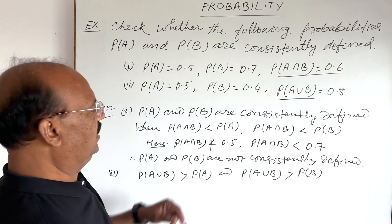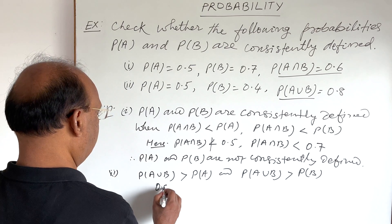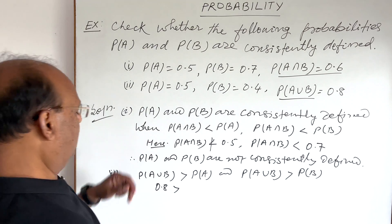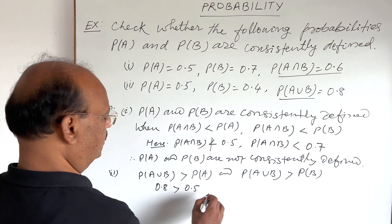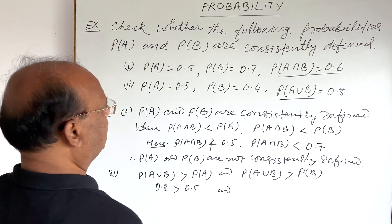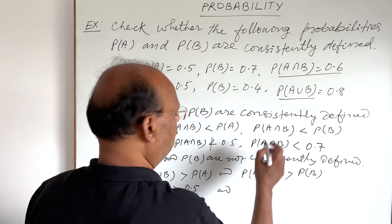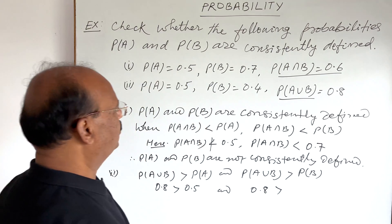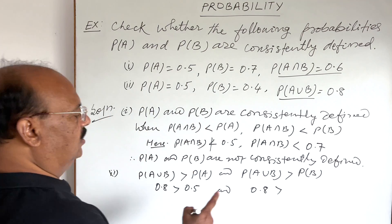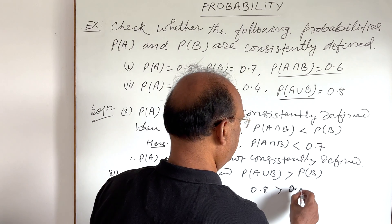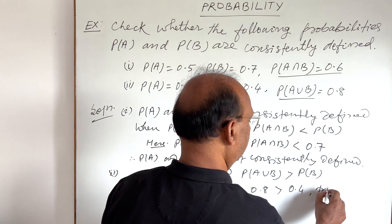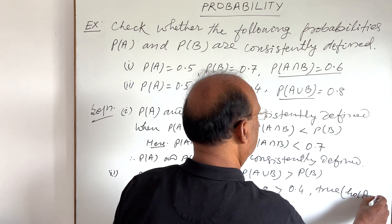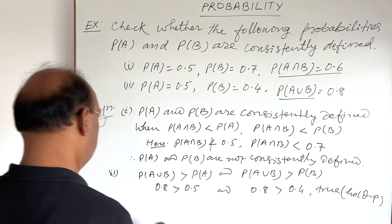P(A union B) is 0.8. It should be greater than P(A) 0.5. So, this is correct. So, this is correct. As well as P(A union B), which is 0.8, should be greater than P(B). P(B) is 0.4. So, this is true. Means, this condition is holding.